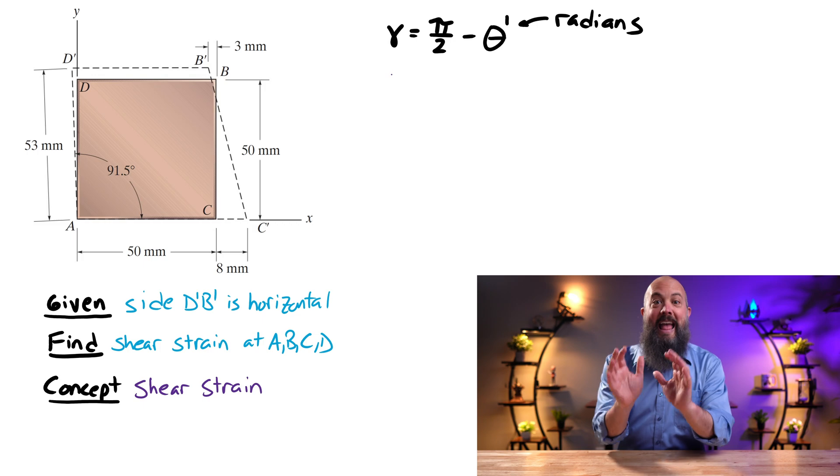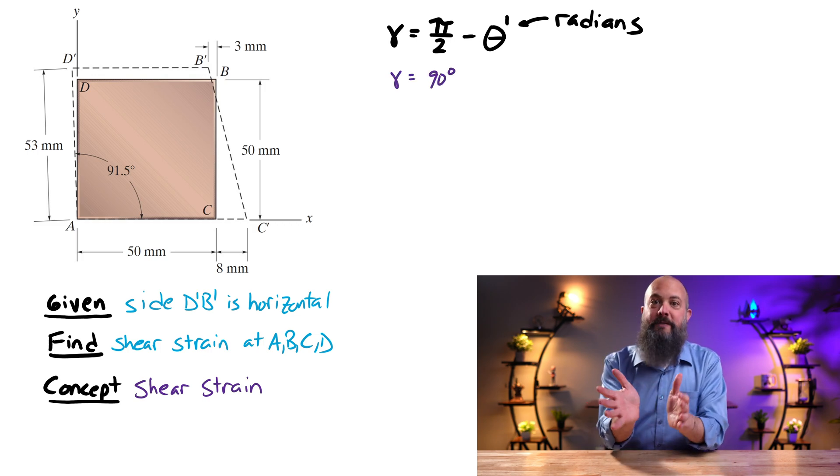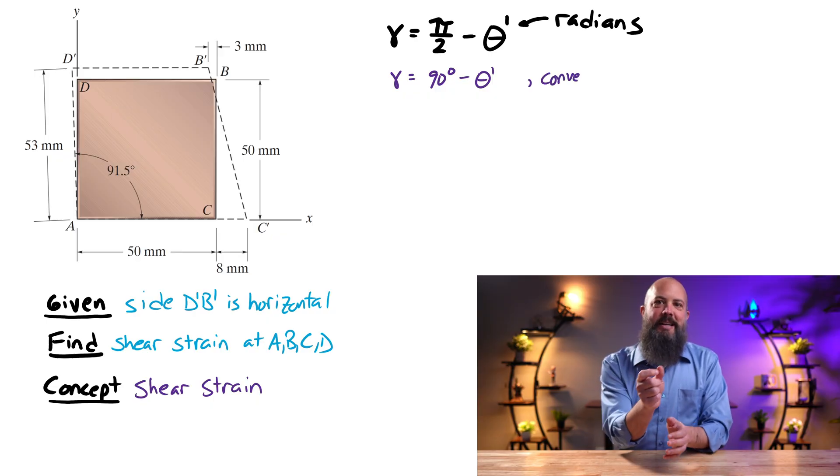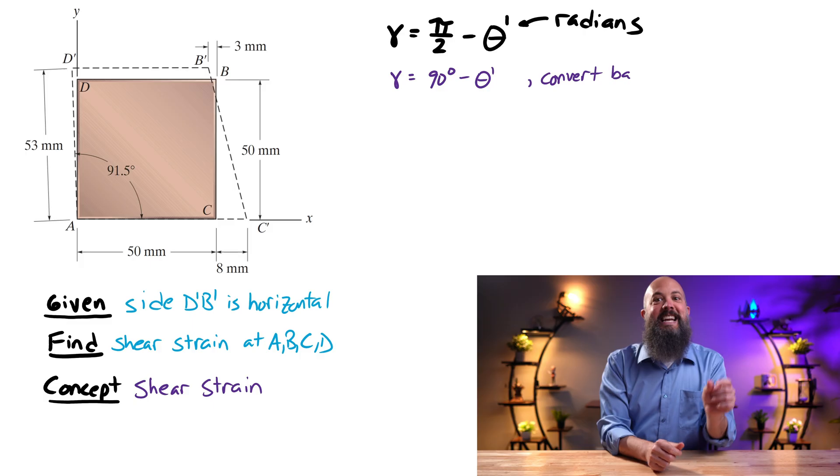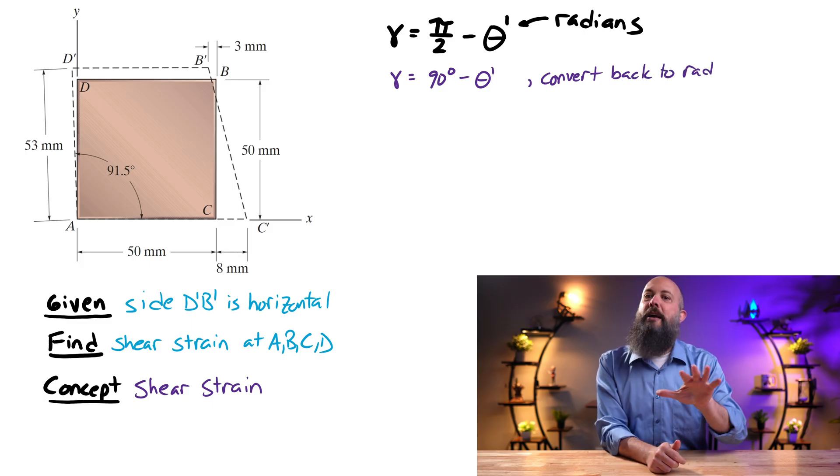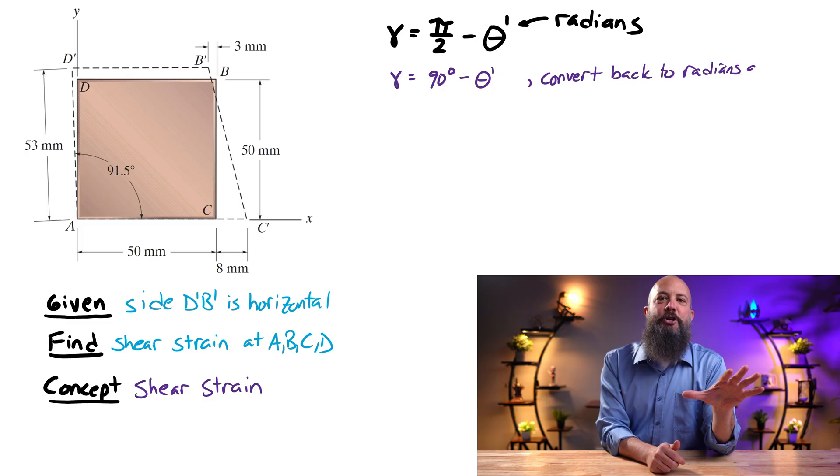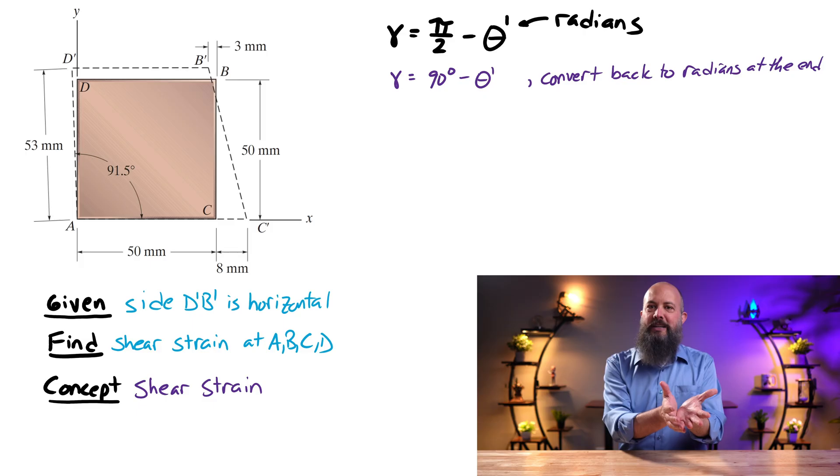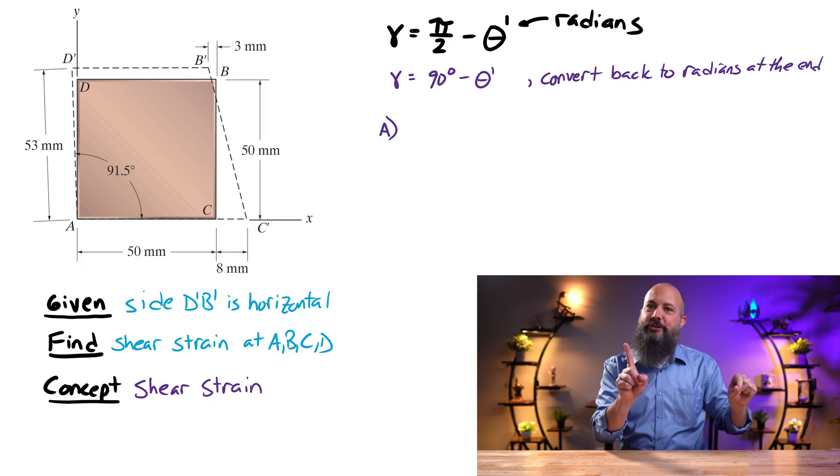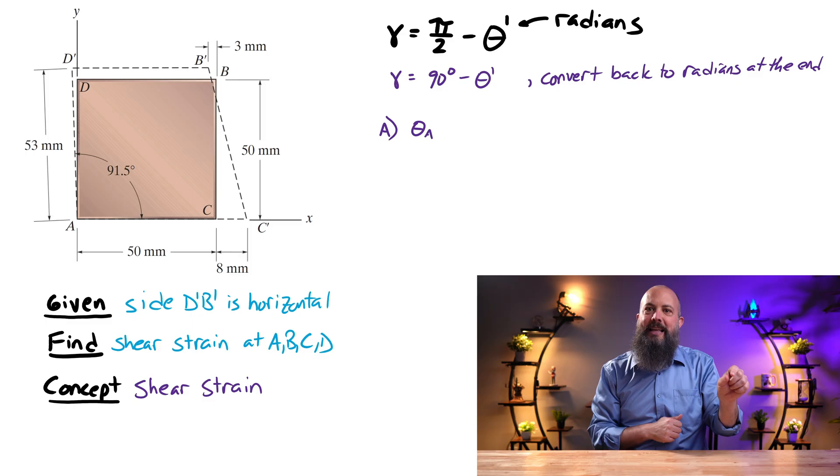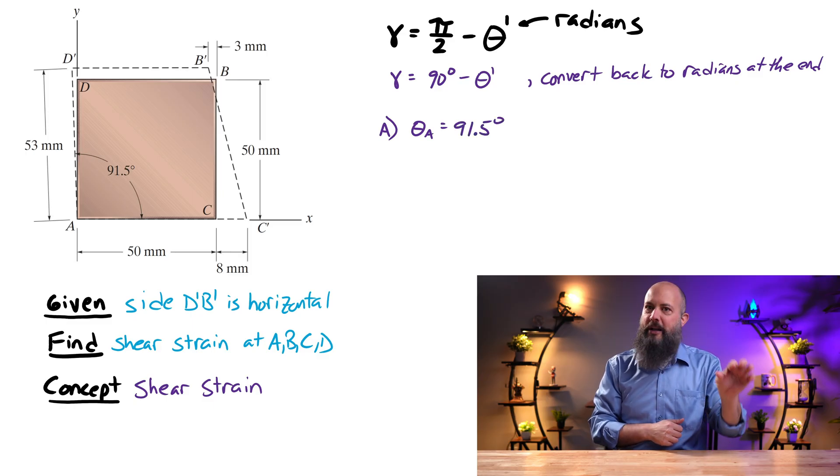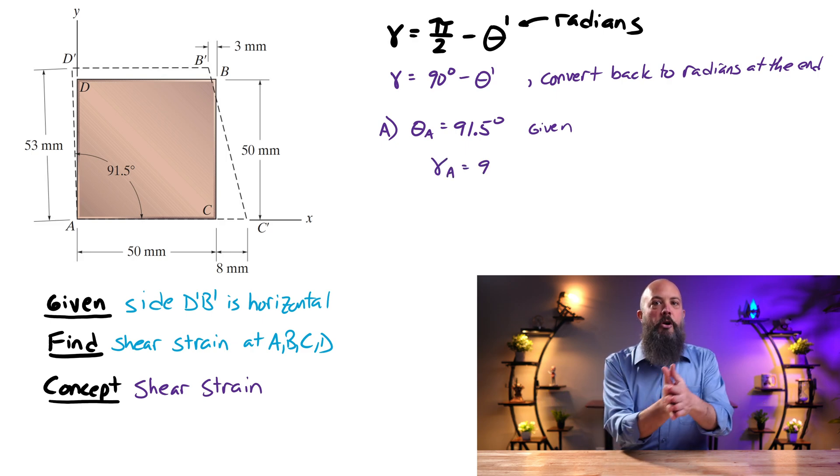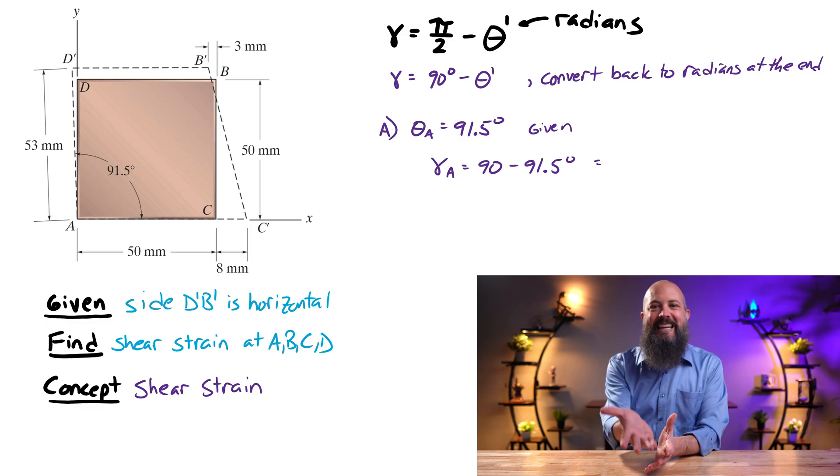So for point A, we're given 91.5 degrees for the new angle. So 90 minus 91.5 would be negative 1.5 degrees. But strain has to be measured in radians. Strain is a unitless quantity. When talking linear, normal 1D strain, it's like inches per inch or millimeters per millimeter, right? So those units cancel out. It's unitless.